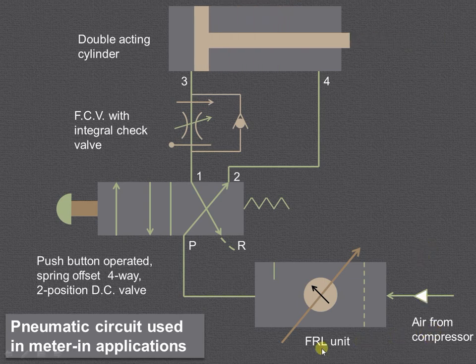Again, air from the compressor enters the FRL unit. Now we are in the right envelope mode. From P it will enter port 2, and from 2 to 4, and it will cause this particular piston to retract inside the cylinder.